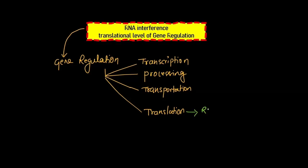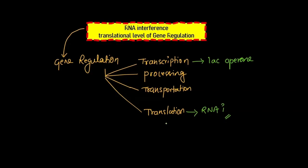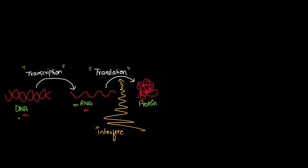So here we will study about RNA interference. And talking about transcriptional gene regulation, we will learn about the lac operon in future videos. But for now we will see about RNA interference. We all know about DNA and how DNA is transformed into different types of RNAs, and that RNA will finally convert into a protein, right?